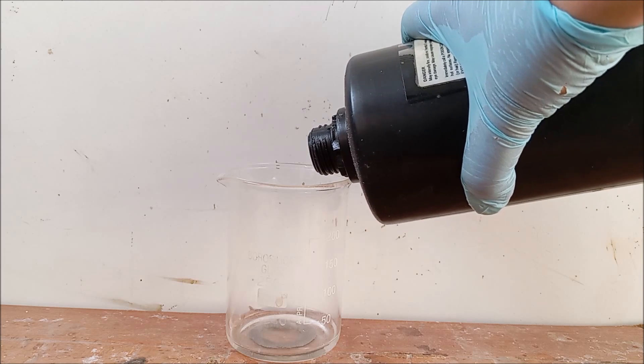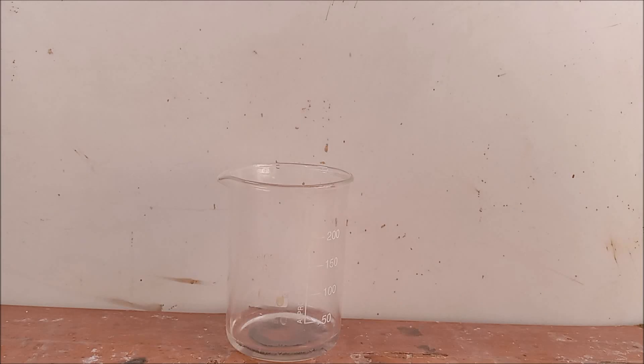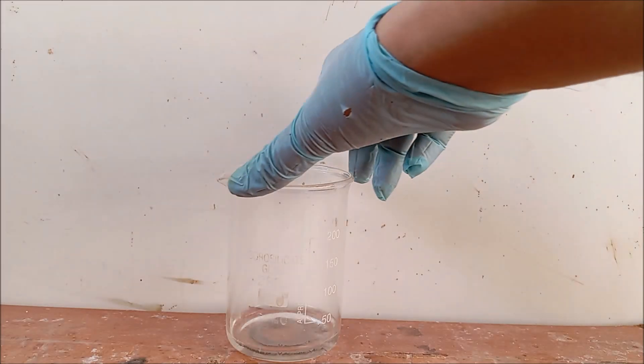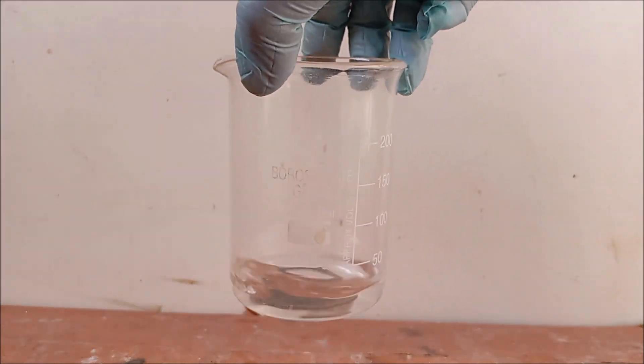To speed up the reaction a bit, add a few ml of hydrogen peroxide. This increases the speed of the reaction but not much. The strength of my 30% hydrogen peroxide has gone down a bit but it works.